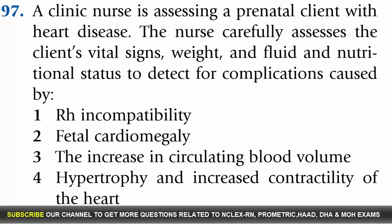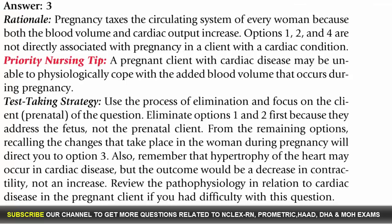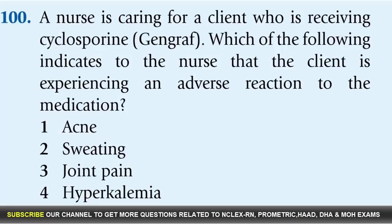Question 97: A clinic nurse is assessing a prenatal client with heart disease, carefully assessing vital signs, weight, and fluid and nutritional status to detect complications caused by: 1. Rh incompatibility, 2. Fetal cardiomegaly, 3. The increase in circulating blood volume, 4. Hypertrophy and increased contractility of the heart. Answer: 3. Rationale: Pregnancy taxes the circulatory system of every woman because both the blood volume and cardiac output increase. Options 1, 2, and 4 are not directly associated with pregnancy in a client with a cardiac condition.